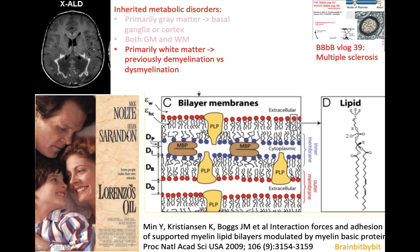In the 90s, there was a movie based on a true story. The boy Lorenzo was diagnosed with X-linked adrenoleukodystrophy, and his parents — who had no medical or chemical background — searched for a cure. They came up with Lorenzo's Oil, which consisted of two long-chain fatty acids added to his diet. This oil slowed the progression of his disease, and Lorenzo lived much longer than the doctors had predicted.